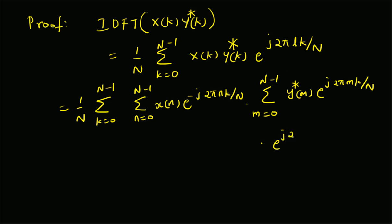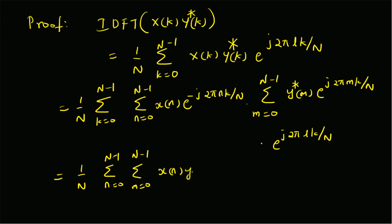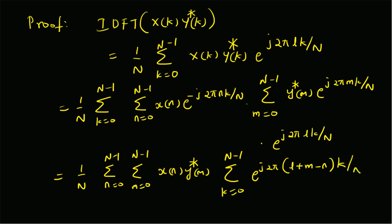Expanding the IDFT further, Y of k conjugate becomes summation m equal to 0 to N minus 1 of y of m conjugate times e to the power plus j 2 pi m k by capital N. We then rearrange the terms and gather all the exponentials, so we have 1 by N, summation over n equal to 0 to N minus 1, summation over m equal to 0 to N minus 1, x of n times y of m conjugate, times summation over k equal to 0 to N minus 1 of e to the power j 2 pi times l plus m minus n into k divided by N.